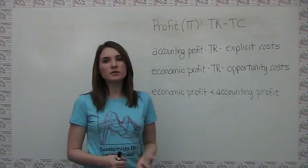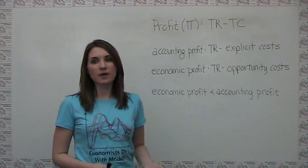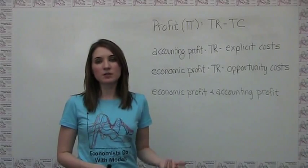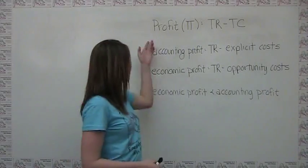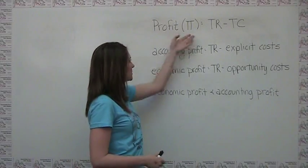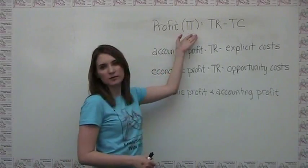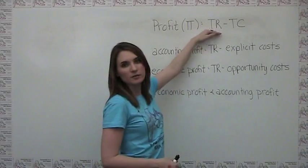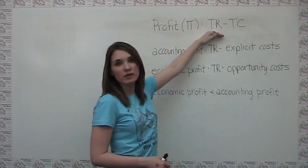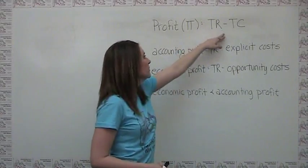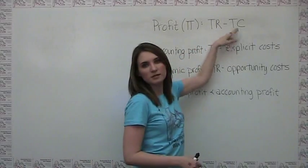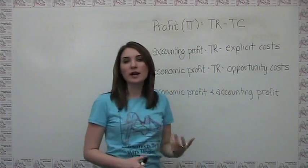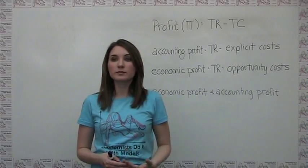Once total revenue and total cost are defined, defining profit is pretty straightforward. Profit, which is often referred to as pi, is just total revenue — the money that you're bringing in — minus total cost, your costs going out. So profit is just what's left over.